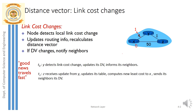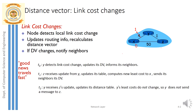That updated information should be circulated to z's neighbors — node x and node y. So node y will also come to know about node z's distance vector. At time t=2, y receives the information about node z's distance vector. But y's least cost does not change, so y does not send a message to z.